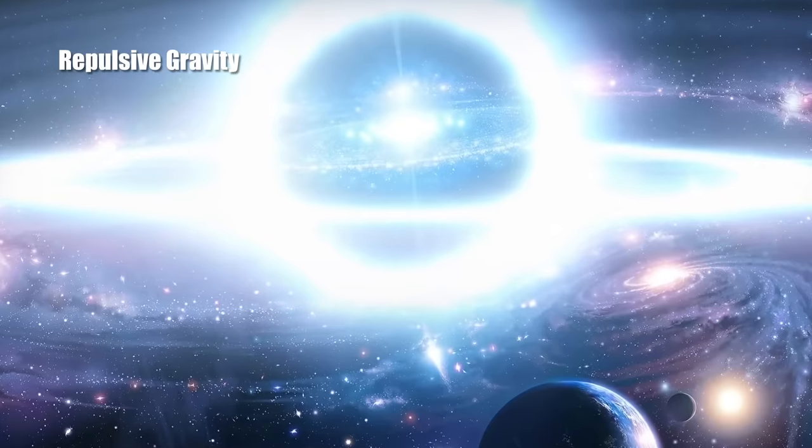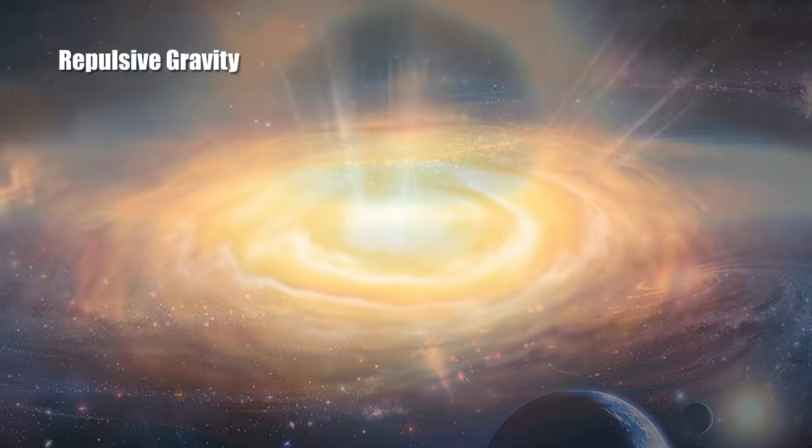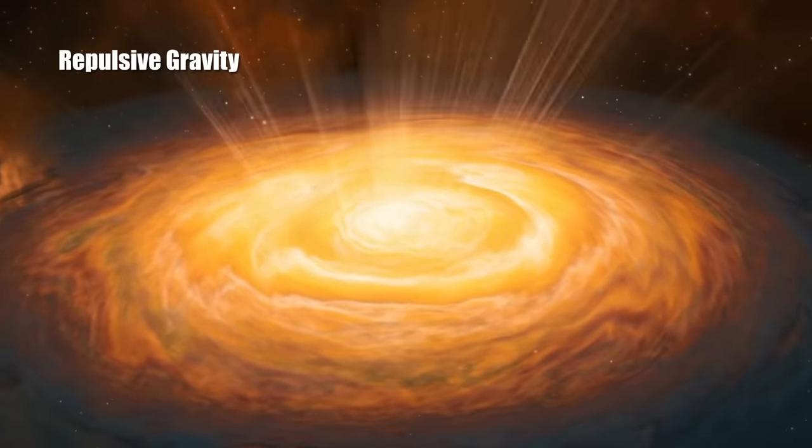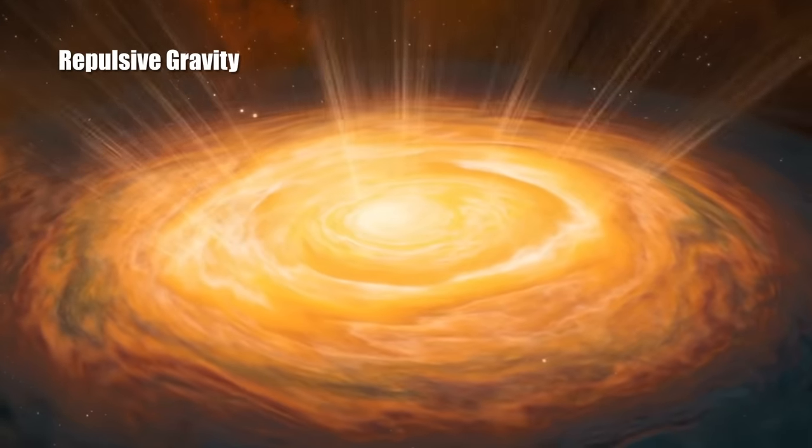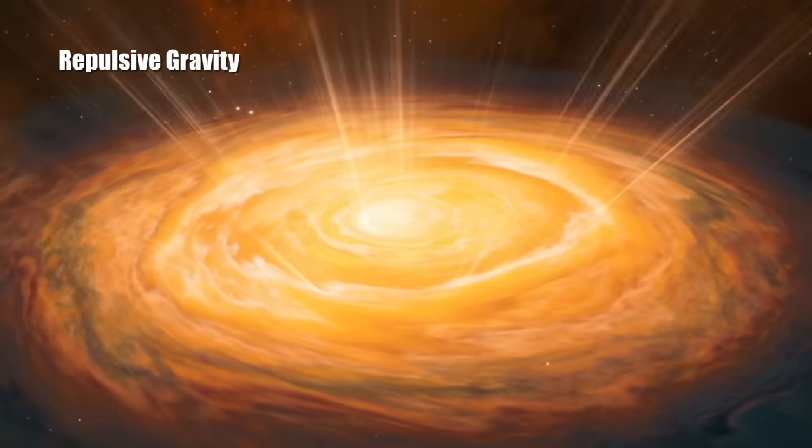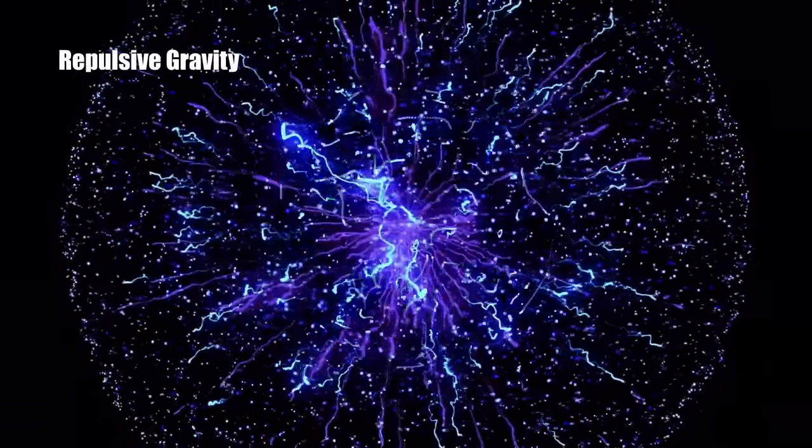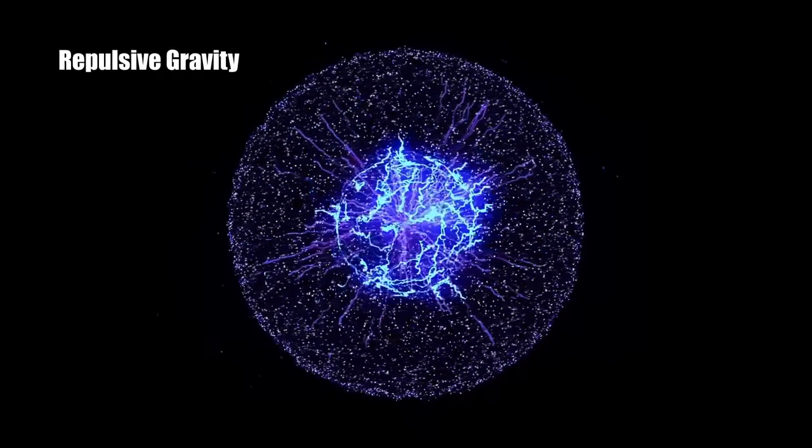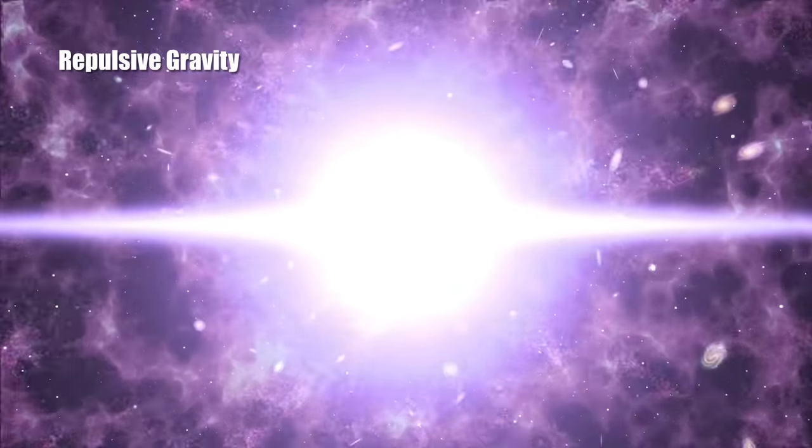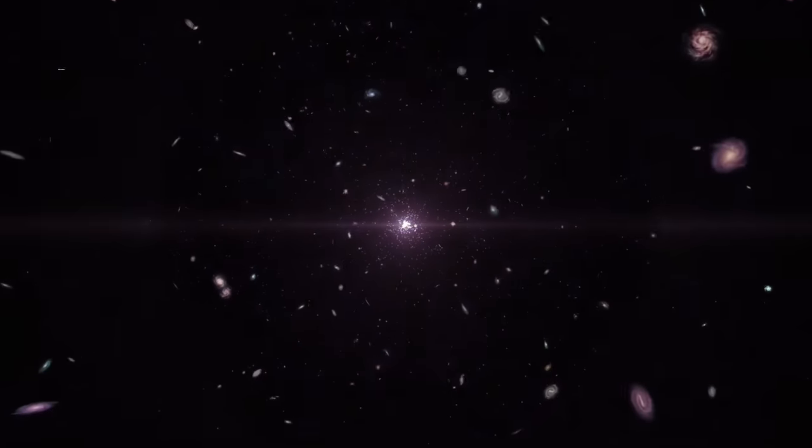If the very early universe was filled with a uniform bath of this energy, we call it the inflaton field, the name doesn't matter, but if it was filled with that energy, it would have been subject to repulsive gravity. What does repulsive gravity do? It pushes everything apart, causes everything to rush outward. So the bang of the Big Bang may have been a spark of repulsive gravity operating within a tiny region of space that pushed everything apart.